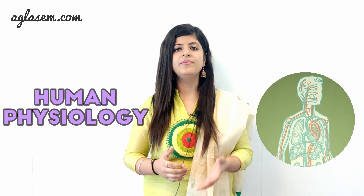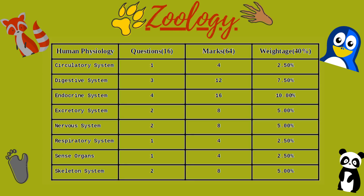We are done with Botany — now let's come to Zoology. The most important unit is Human Physiology, carrying around 64 marks. The unit has 16 questions and marks weightage of 64. Topics are: Circulatory System (1 question, 4 marks), Digestive System (3 questions, 12 marks), Endocrine System (4 questions, 16 marks), Excretory System (2 questions, 8 marks), Nervous System (2 questions, 8 marks), Respiratory System (1 question, 4 marks), Sense Organs (1 question, 4 marks), and Skeletal System (2 questions, 8 marks).